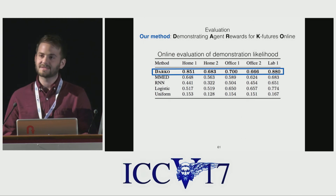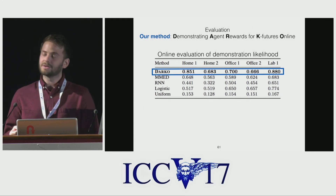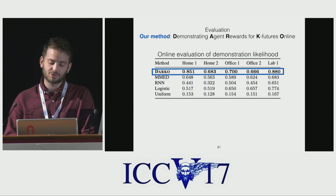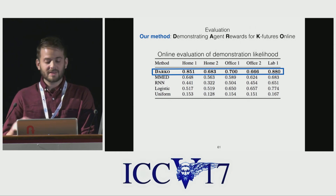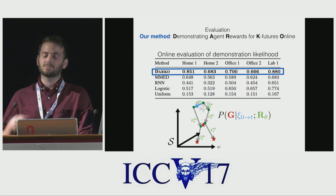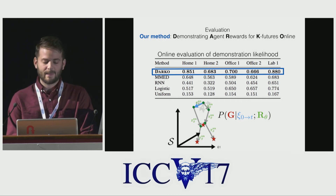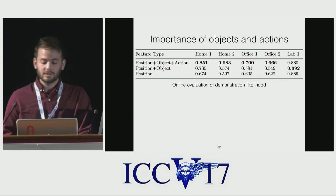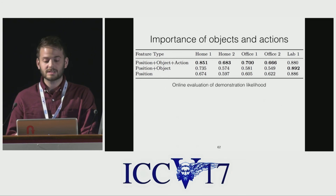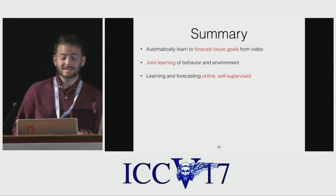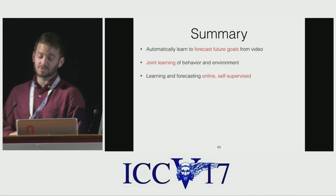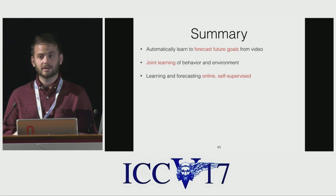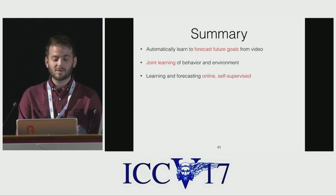We evaluated our method on a dataset of separate environments. Our evaluation measures the likelihood of the true goal under each model's prediction. We built several baselines that rely on our state tracking and goal detection approaches and observed that our method outperformed the others. Our method has the benefit of explicitly reasoning over the state space and graph of possible behaviors with our online inverse reinforcement learning approach. We performed a feature ablation to illustrate the importance of various components — while position is important, the highest performance is obtained by also incorporating the semantic components of states and actions.